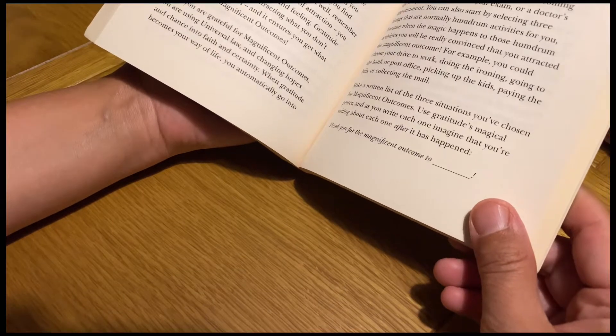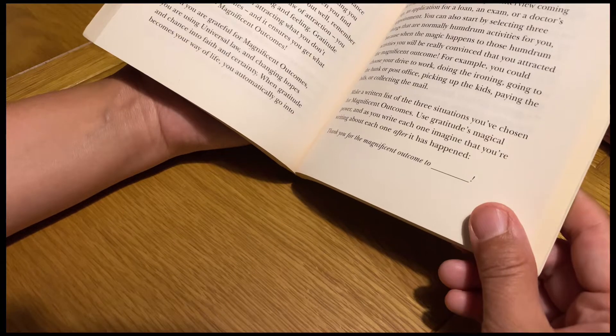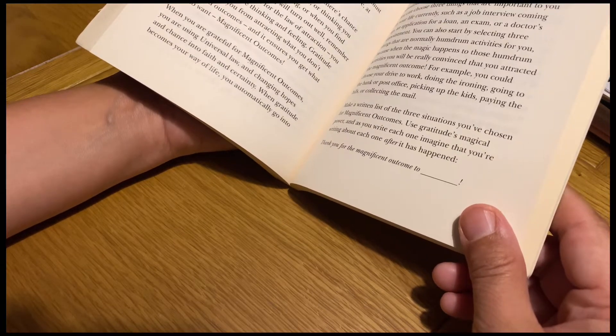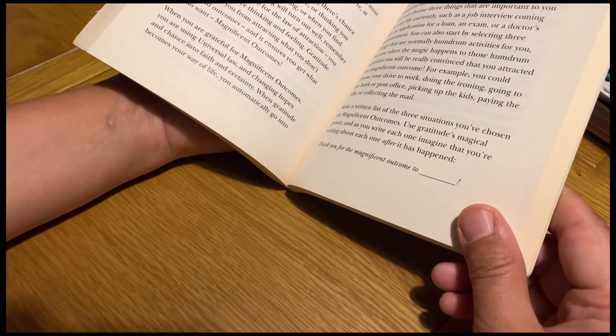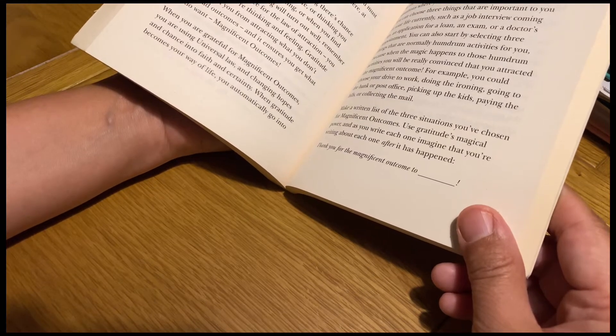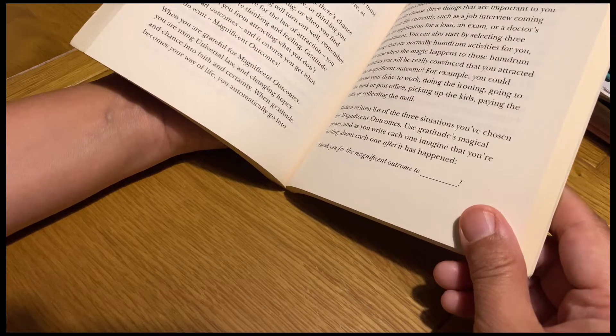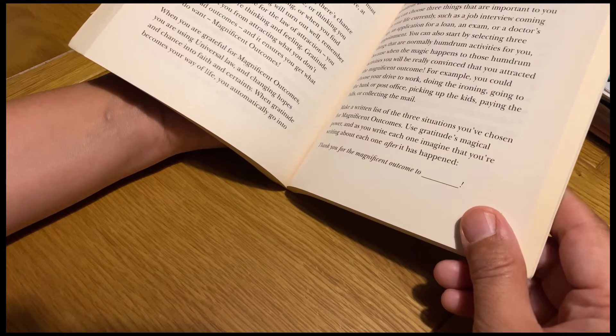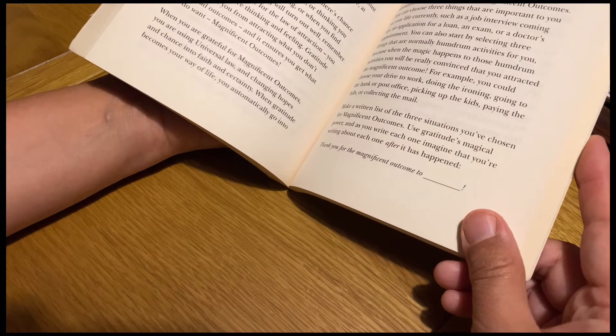What we have to do: make a written list of three situations you choose the magnificent outcome for. For example, today or tomorrow there's going to be any meeting or any interview, are you going for any special shopping. So you can make a list of these things and you can expect thank you for the magnificent outcome to my interview.